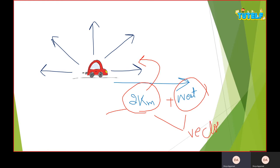For scalar quantities, speed is a good example because we do not mention direction along with it. Velocity, on the other hand, is a vector quantity because direction is associated with it.